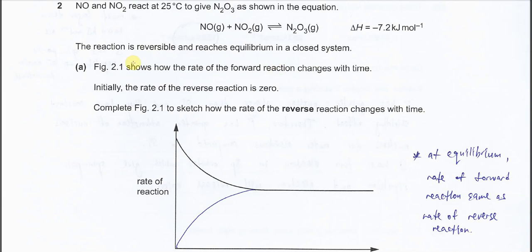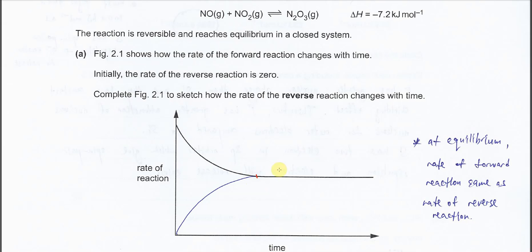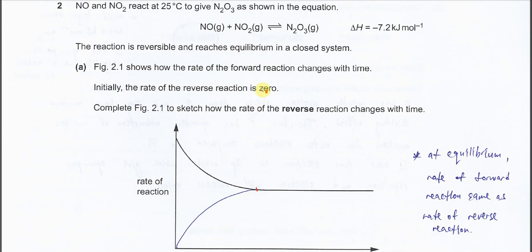Part A. Figure 2.1 shows how the rate of the forward reaction changes with time. So this is the forward reaction, decreasing until it reaches a constant rate at this time. Initially, the rate of the reverse reaction is zero, of course, because initially the N2O3 is still not yet formed.